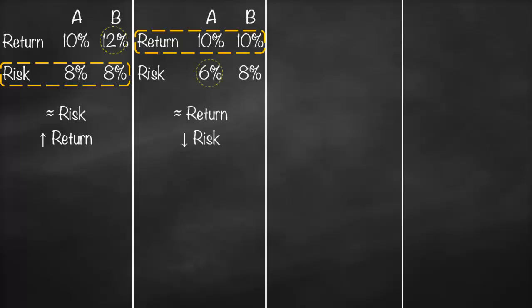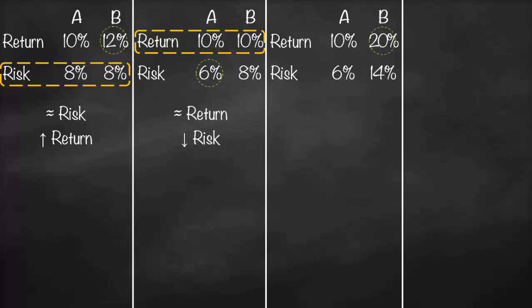In another example, investment A has an expected return of 10% and risk of 6%, while investment B has a return of 20% and risk of 14%. For the highest return we would choose B, since 20% is greater than 10%. But for the lowest risk we would choose A, since 6% is lower than 14%. So here we have contradicting choices.